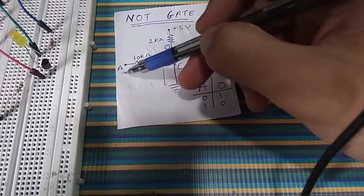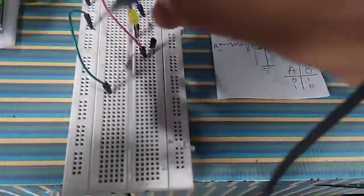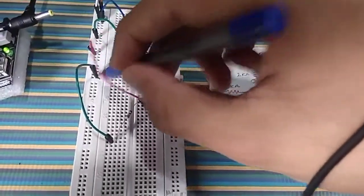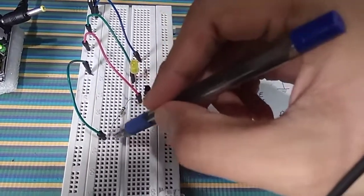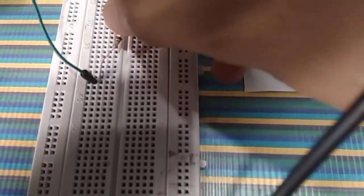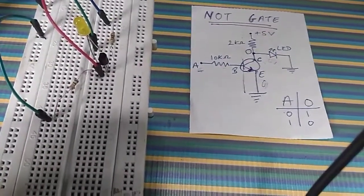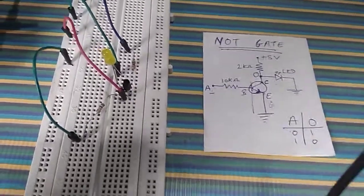The base terminal is connected to input A through a 10 kilo-ohm resistor. I have given the input A through the 5-volt power supply using a green wire, which goes further to a 10 kilo-ohm resistor into the base terminal. Let me just remove this wire and show you — this goes into the base terminal, and this is how the 10 kilo-ohm resistor is connected.